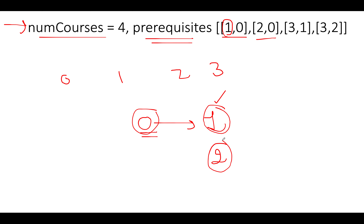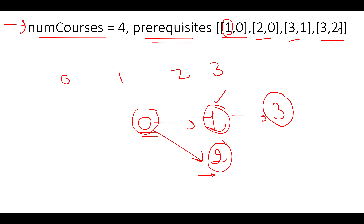Next is [3,1]: for completing course 3 you must complete course 1, so an edge starts from node 1 and ends at node 3. Then [3,2]: for completing course 3 you must complete course 2, so an edge goes from node 2 to node 3. The graph now has two edges originating from node 0, pointing to nodes 1 and 2, and both converge at node 3.